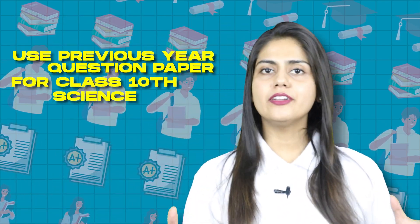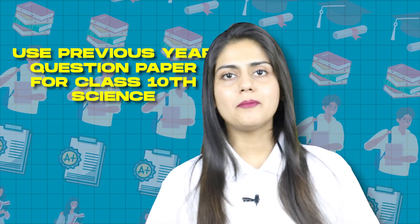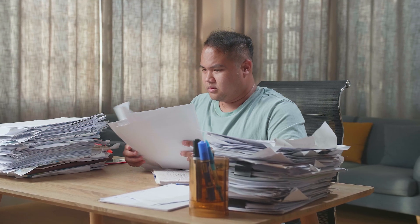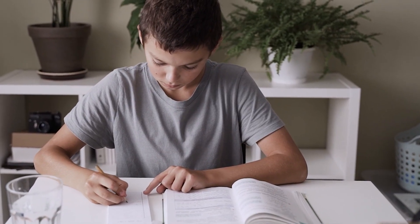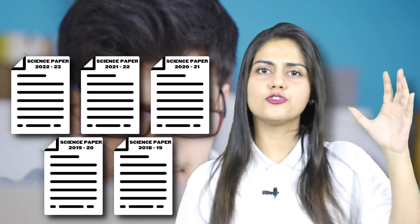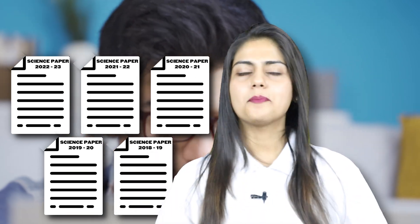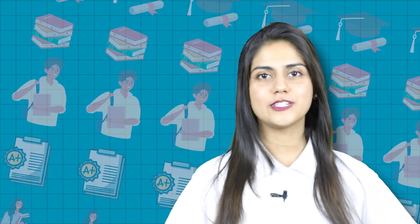Point number four: use previous year question papers for Class 10th Science. You should go through at least 5 to 7 years of previous year science question papers. Review which topics and which questions CBSE asks every year in the board exams. Analyze them carefully, because there will be some topics that CBSE asks every time, meaning there is a high chance those questions will appear in the board exam.